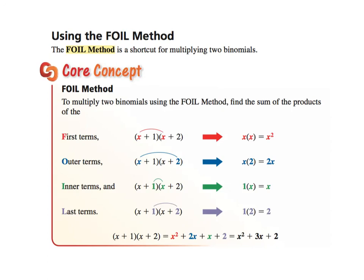This is called the FOIL method. I'll be honest — I don't love calling it FOIL because it's just distributing. It only works with two binomials. FOIL stands for First, Outside, Inside, Last. Multiply the first terms to get x squared, the outer terms for 2x, the inner terms for 1x, and the last terms: 1 times 2 is 2. Combine the middle terms 2x plus 1x, giving the answer x squared plus 3x plus 2.